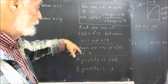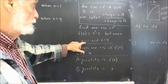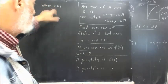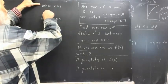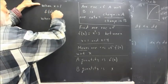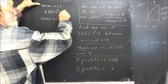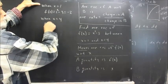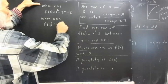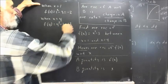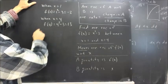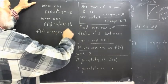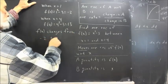Again, the A quantity is F(x) and the B quantity is x. X changes from 1 to 4. When x = 1, F(1) = 1² − 3 = −2. When x = 4, F(4) = 4² − 3 = 13. So F(x) changes from −2 to 13.